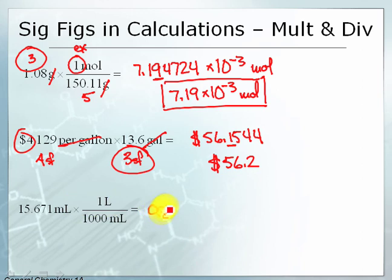In this one, if I plug it in my calculator, I get 0.015671 liters. The milliliters cancel, I'm left with units of liters. Here I have 5 significant figures. This one's exact, and this is exact also. This is a unit definition for how milliliters relate to liters, and this is an exact value.